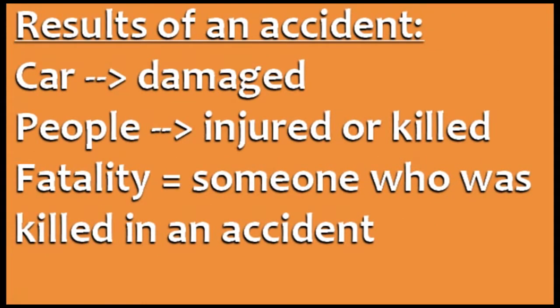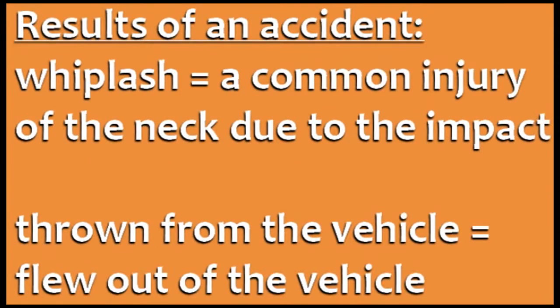Finally, let's look at the results of an accident. We can say the car is damaged, and the people in the cars are injured or killed. A more formal word for someone killed in an accident is a fatality. For example, there were three fatalities, or luckily there were no fatalities. One common injury in car accidents is whiplash — an injury to the neck due to the sudden impact, when your head goes forwards or backwards very suddenly. If someone in the car wasn't wearing a seatbelt, they could be thrown from the vehicle, meaning they flew out of the vehicle and landed some distance away.